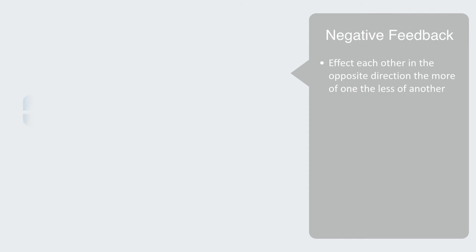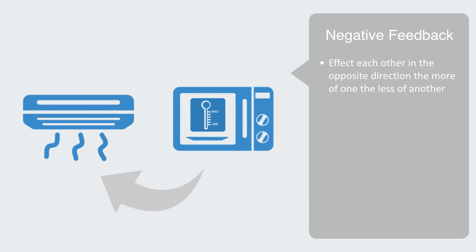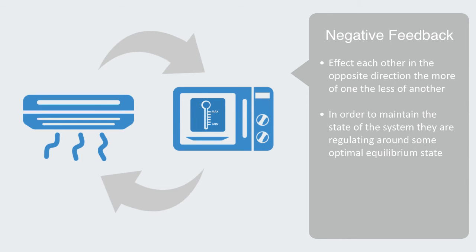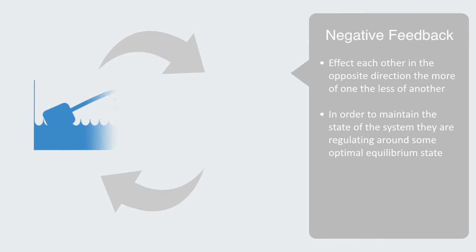Thermostats use negative feedback to balance the temperature of your house, as do all forms of control systems in order to maintain the state of the system they are regulating around some optimal equilibrium state. The ball cock, or float, is another example of a control system that uses negative feedback to control the water level in a reservoir. When the water goes up, the float cuts in, reducing the inflow, and vice versa, creating an equilibrium within some set of parameters to the water level.